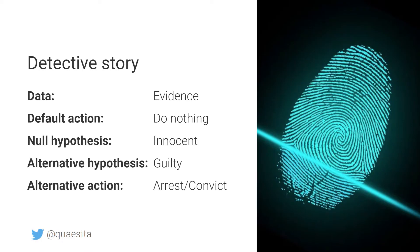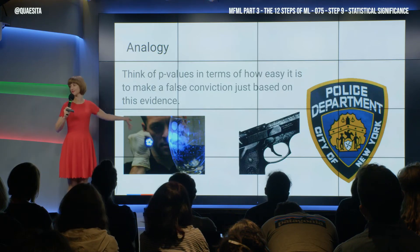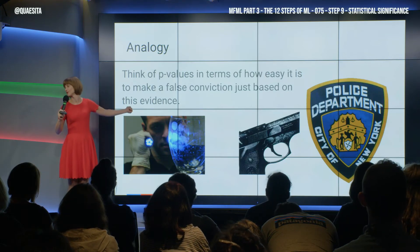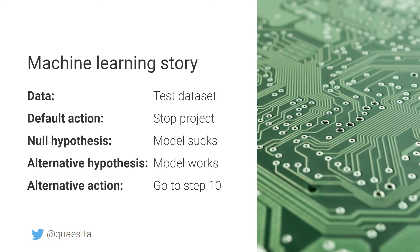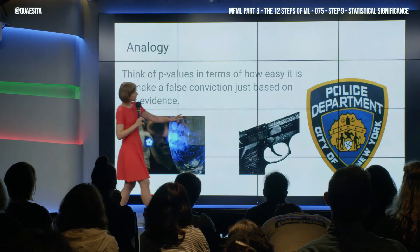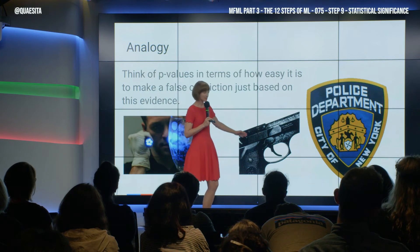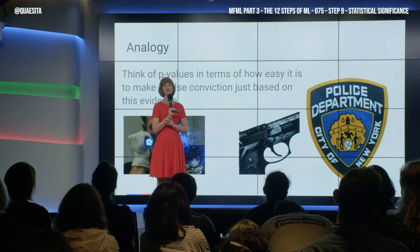Because your default action says: upon learning nothing, I leave this person out of prison — that's what you go and do. But you learn nothing, because this evidence is not informative and doesn't make you change your mind. On the other hand, imagine if instead of a wine glass they found the murder weapon with the suspect's fingerprints on it.